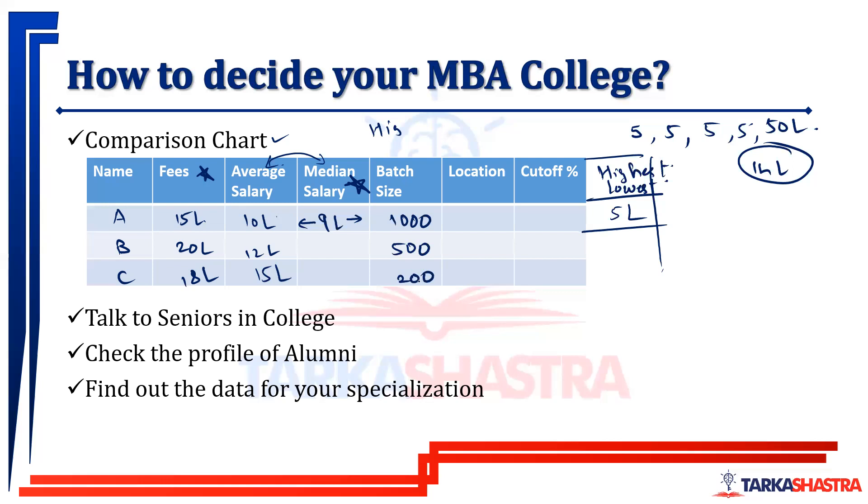Getting placed among 200 students is easy, but getting placed among 500 or 1000 students is difficult. So batch size is an important thing to keep in mind.